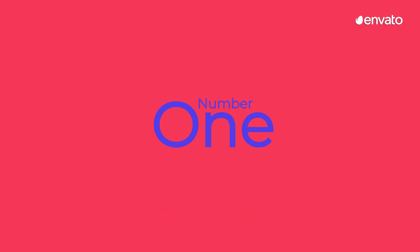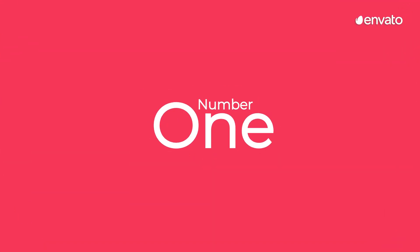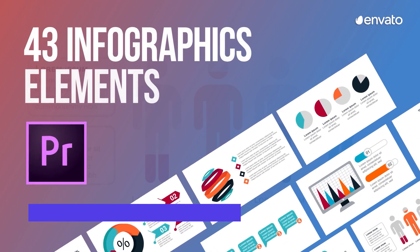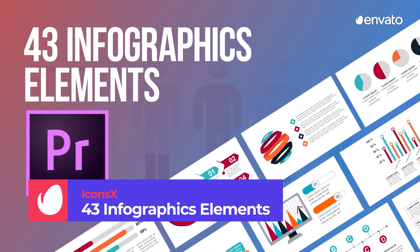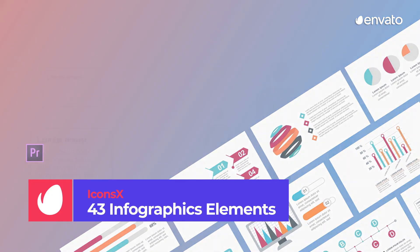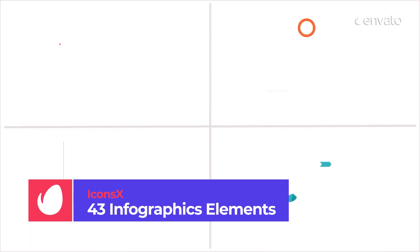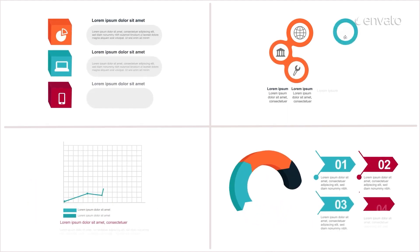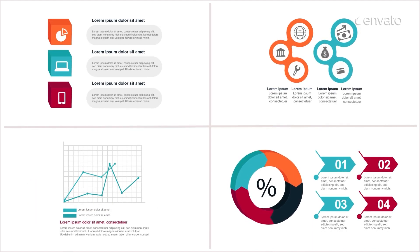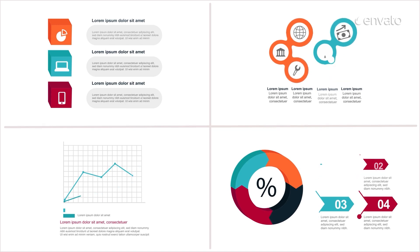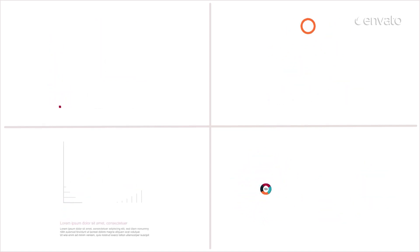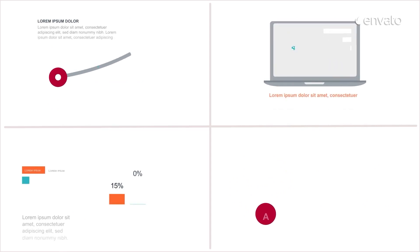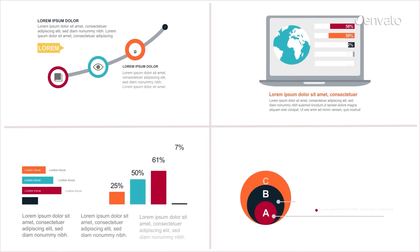Number 1 – 43 Infographics Elements by IconsX. If you're looking for a way to improve the graphics on your video, give this template a try. The 43 charts, diagrams and timelines will let you transform data-heavy videos and bullet points into beautifully animated infographics that will deliver your info in the best possible way.